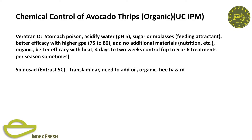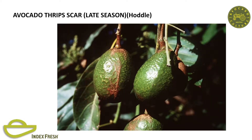Now we have Entrust, which works much longer, but you need to add oil and it's a bee hazard. The benefit of Veritran is it's not a bee hazard; the detriment is it doesn't work very long. This is late season thrips scar—high population of thrips on a larger fruit, but still doing some significant scarring.